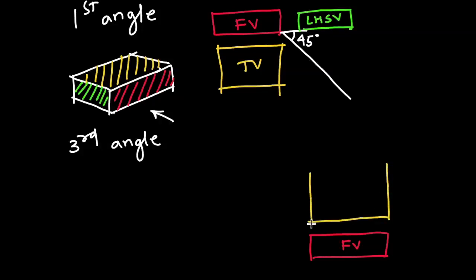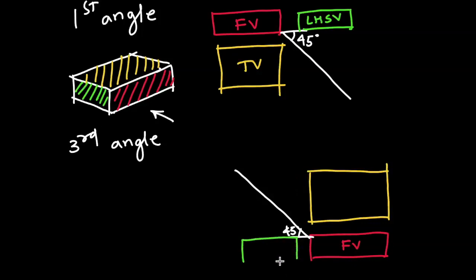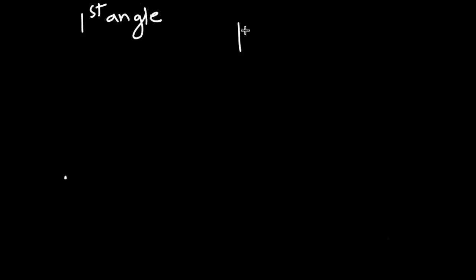Now in third angle, first we will draw the front view. The top view we will draw above the front view. For the side view, we take 45 degrees from here. Now in this case, the left hand side view comes on the left hand side. So that is the difference — this is the top view, this is the left hand side view.